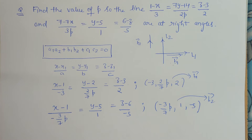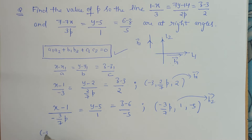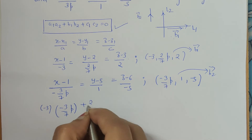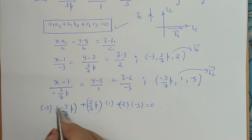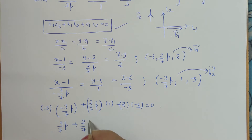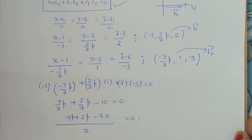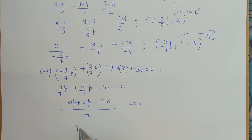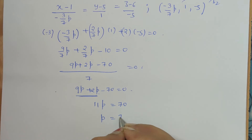Now we apply the condition: the sum of products of corresponding direction ratios equals zero. This gives: (−3)(−3/7p) + (2/7p)(1) + (2)(−5) = 0, which simplifies to 9/7p + 2/7p − 10 = 0. Taking LCM as 7: 9p + 2p − 70 = 0, so 11p = 70, and therefore p = 70/11.